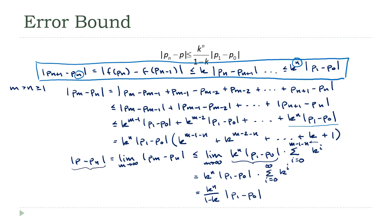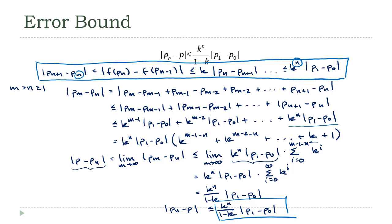So the final result is: |p_n - p| ≤ k^n/(1-k) times |p_1 - p_0|. That's a more practical bound than the previous one, which is why we went to the trouble. To apply the first bound, we needed to know the value of p — but that's the thing we're trying to find. This second bound is more practical because it only requires p_1 and p_0, both of which we know: we picked p_0, and we get p_1 by putting p_0 into the function.